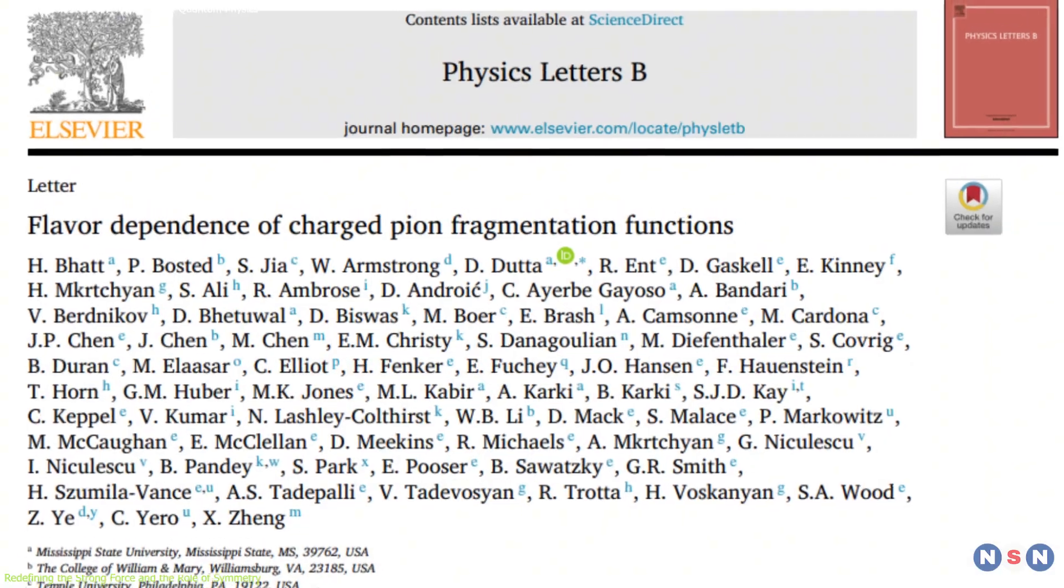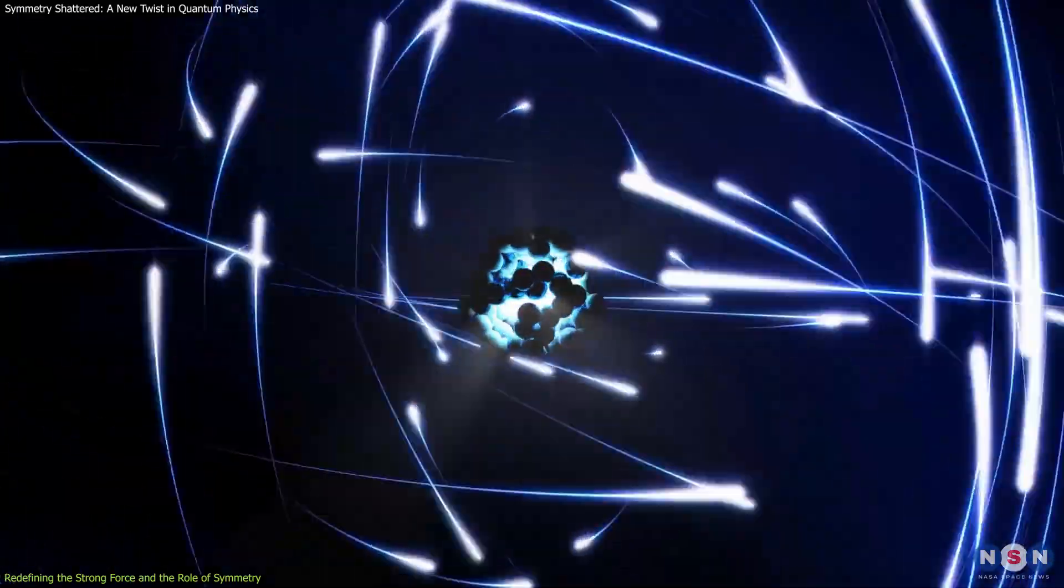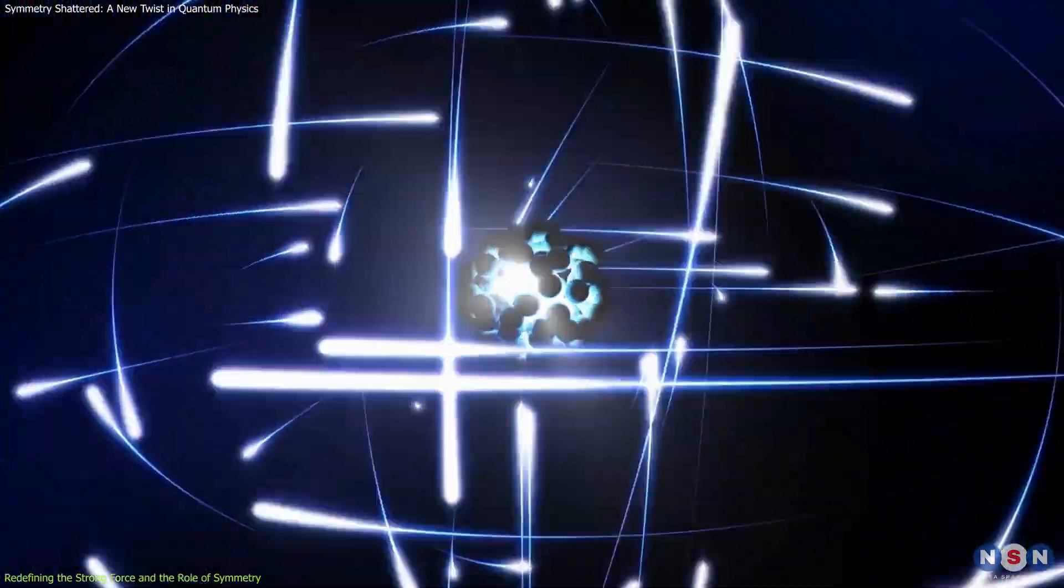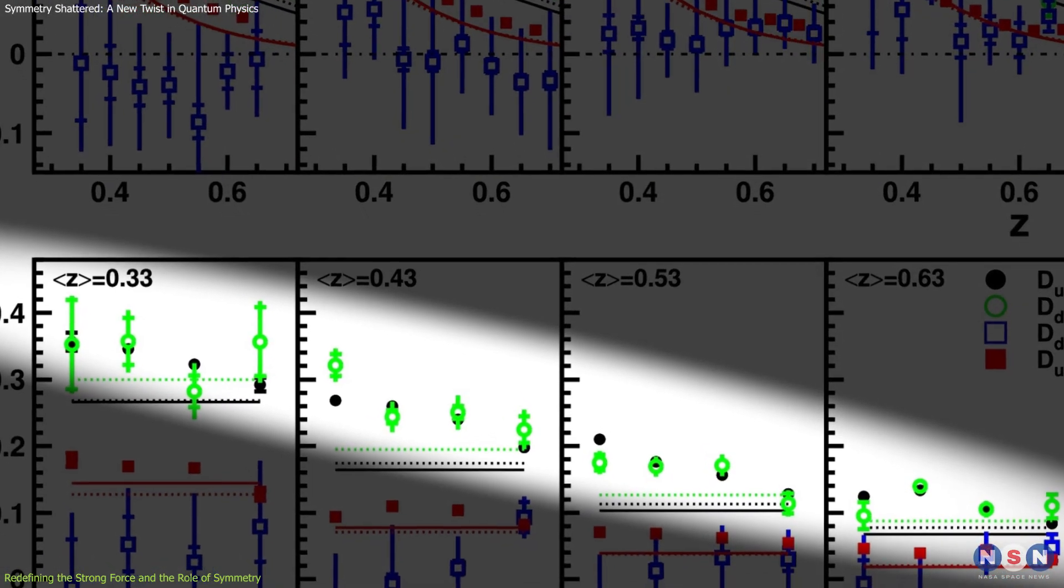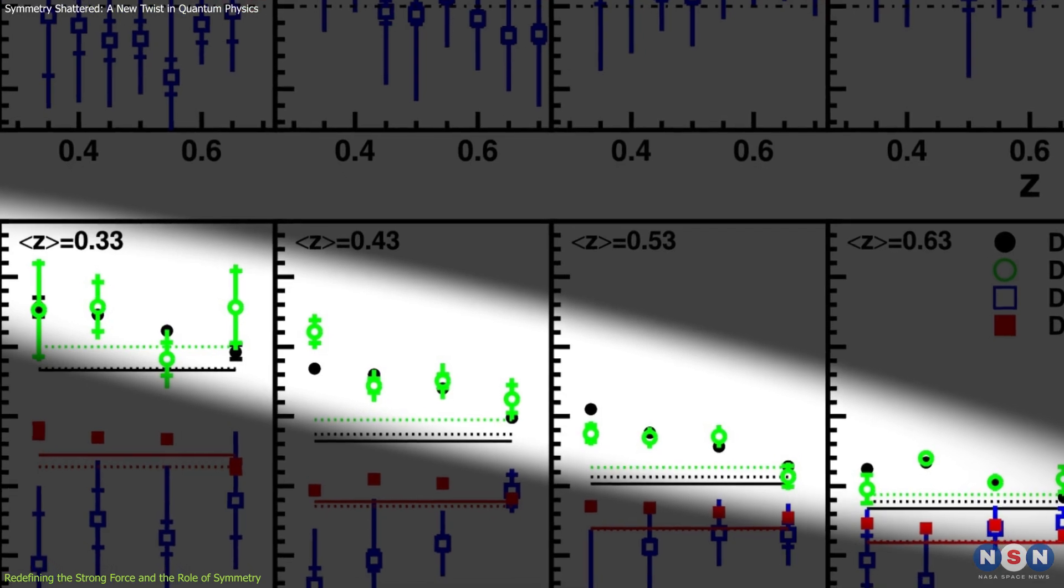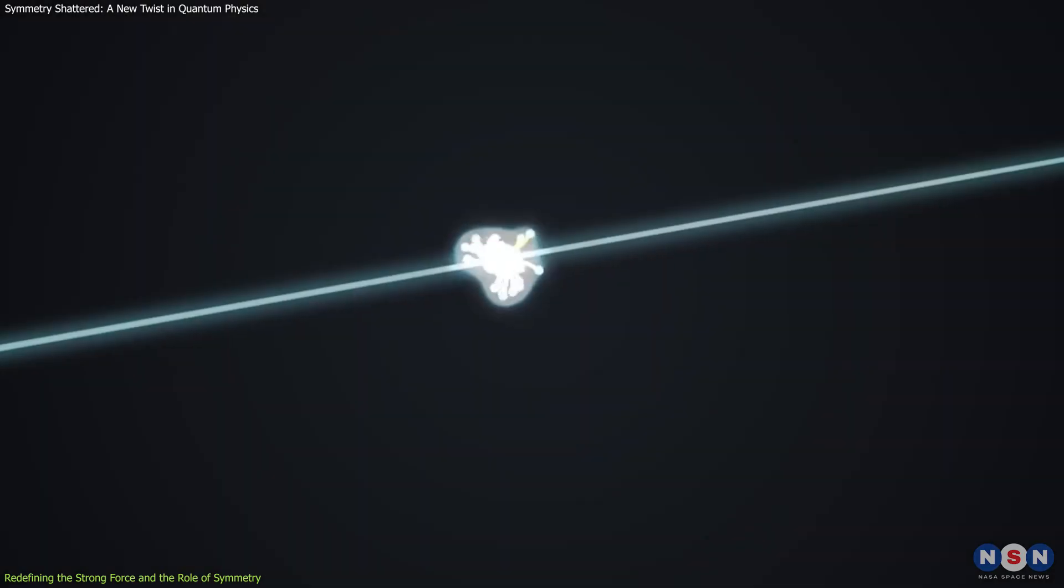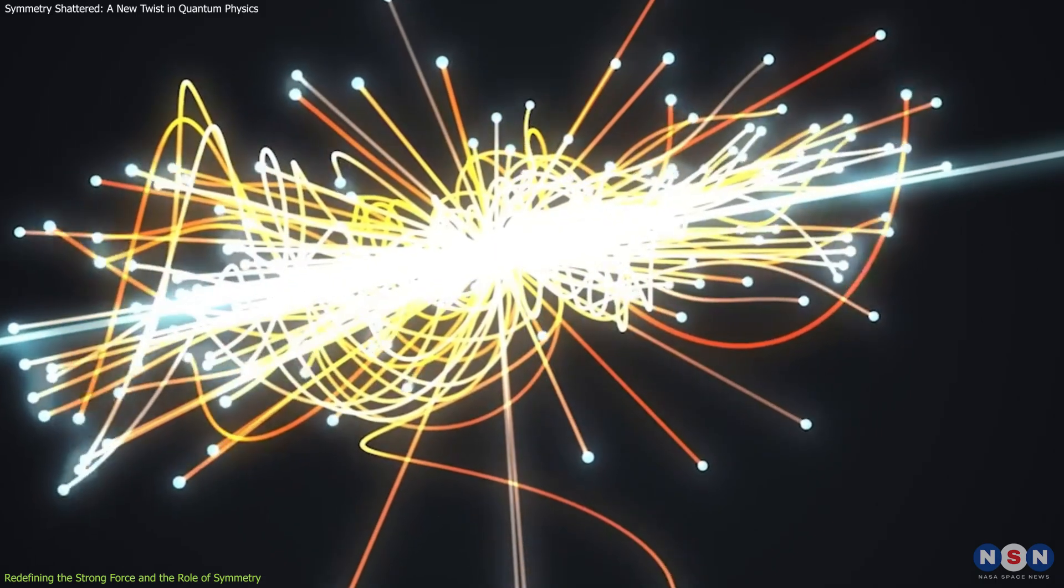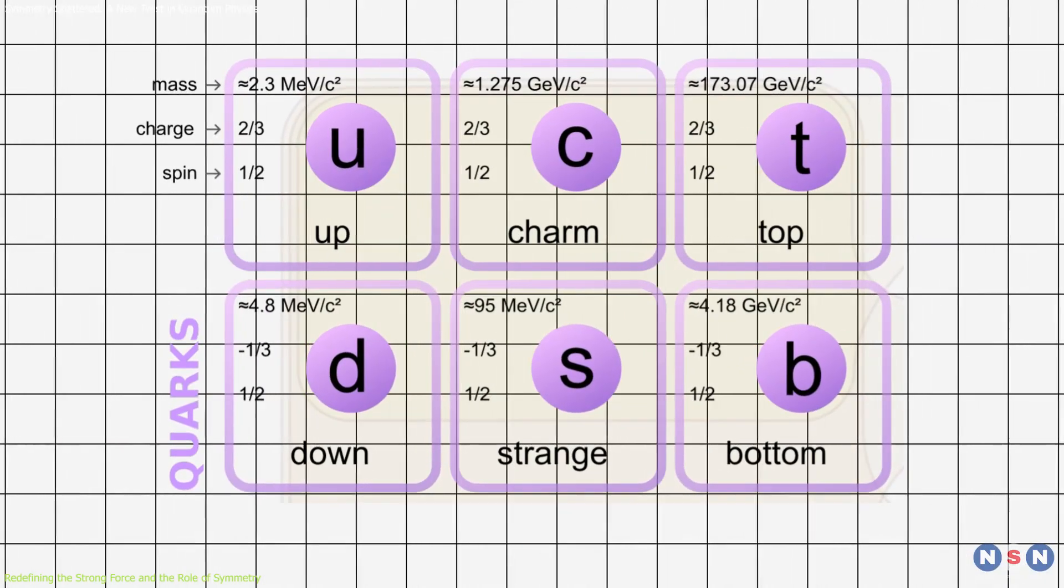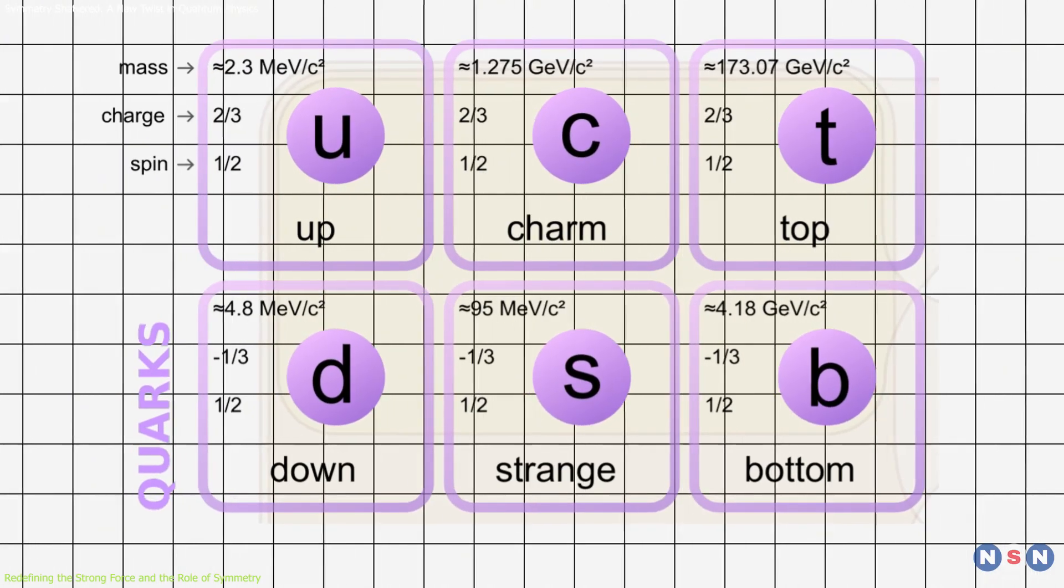The recent experiment, however, shows that quark fragmentation is not always symmetrical. In particular, unfavored fragmentation events deviate from expected behavior. This suggests more complex interactions than previously modeled, or that our understanding of color confinement under QCD may need refinement.